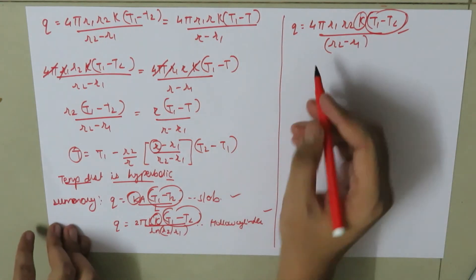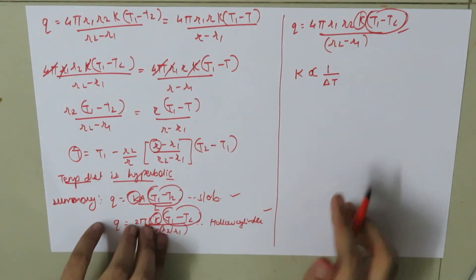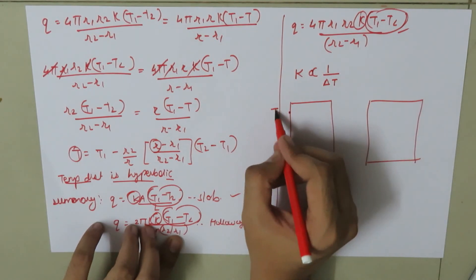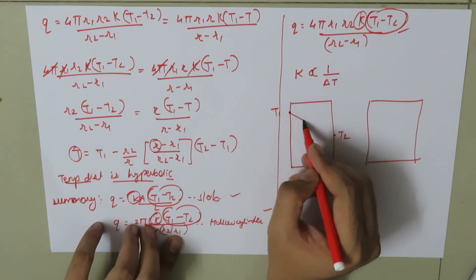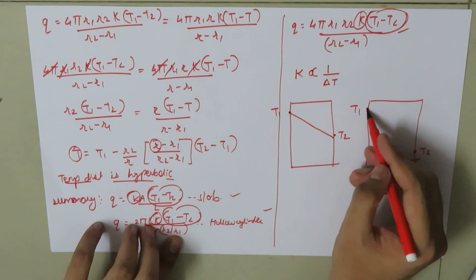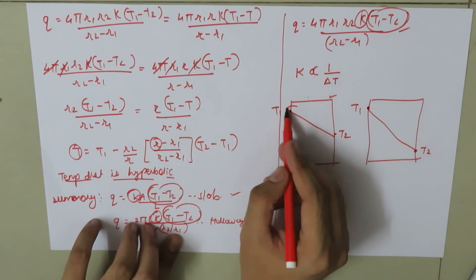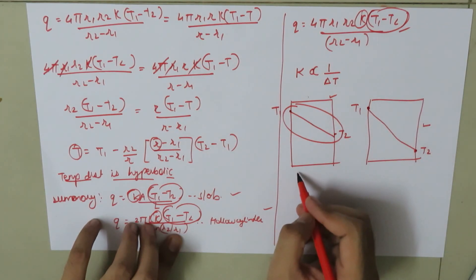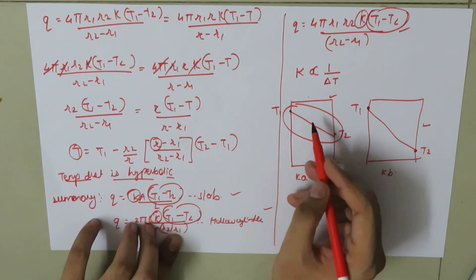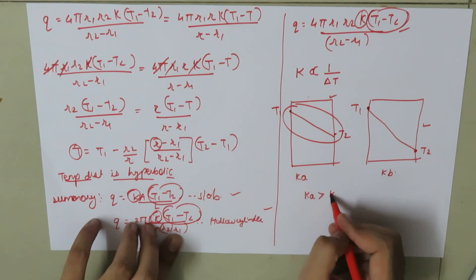From these three equations, heat flow Q is proportional to thermal conductivity K and to the temperature difference delta T. For example, if we have two slabs — one with temperatures T1 and T2 giving a larger difference, and another with T1 and a much lower T2 giving a smaller difference — the slab with the smaller temperature difference will have a higher thermal conductivity Ka compared to Kb of the other slab.